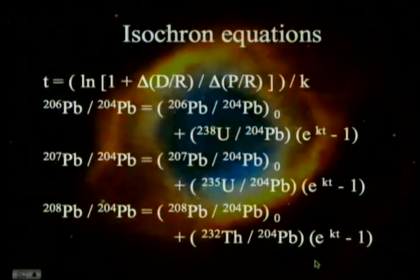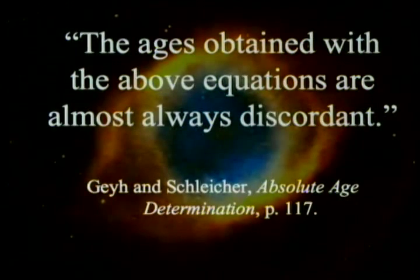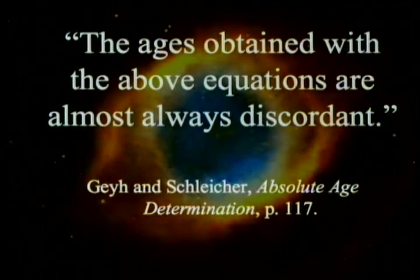In theory, we should be able to get three different dates on any one of these samples, and they should all match. However, that doesn't prove that the age is accurate because all of those dates can be precisely duplicated by mixing lines. More importantly, according to Guy and Schleicher's Absolute Age Determination, the ages obtained with these equations are almost always discordant — they don't give you the same age. You may have heard that all radiometric dating gives you the same age, but it sounds like two professionals in the field, at least in 1993, disagreed with that.